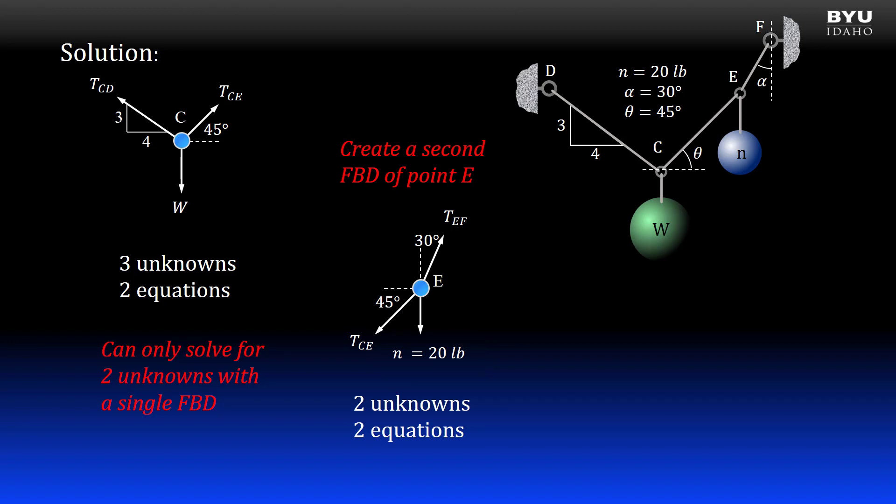By solving our equations of equilibrium, we can find TCE and TEF. Our strategy then is to solve for TCE using the free body diagram of point E, then transfer our answer for TCE to the free body diagram at point C, leaving only two unknowns that we can solve for by summing forces with our two equilibrium equations.